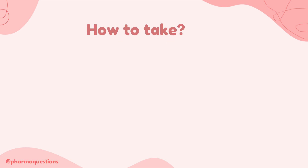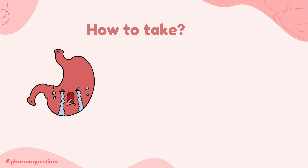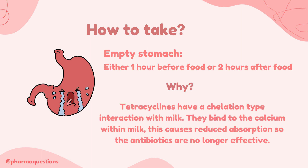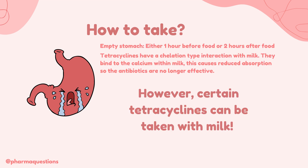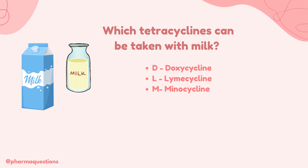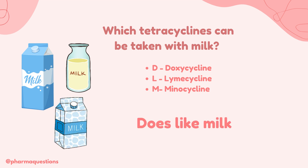Now let's take a look at how tetracyclines are taken. Tetracyclines are taken on an empty stomach — one hour before food or two hours after food — because tetracyclines have a chelation type of interaction with milk. They bind to the calcium within milk, causing reduced absorption, so the antibiotics are no longer effective. However, this is not true for all tetracyclines; doxycycline, lymecycline and minocycline are exempt from this rule, and this can be remembered by the mnemonic 'does like milk.'